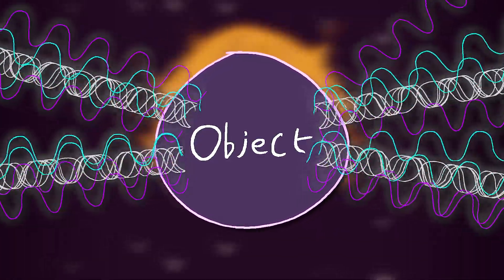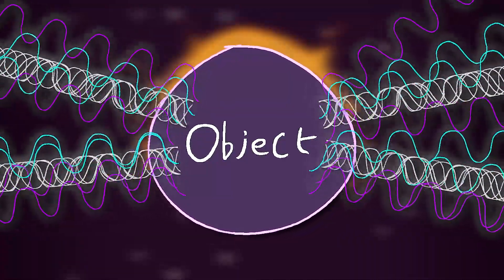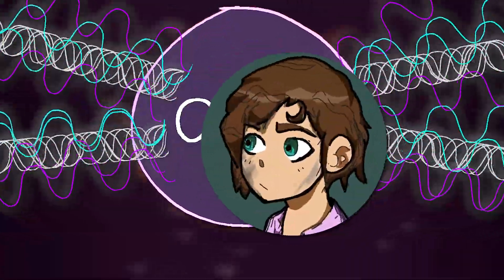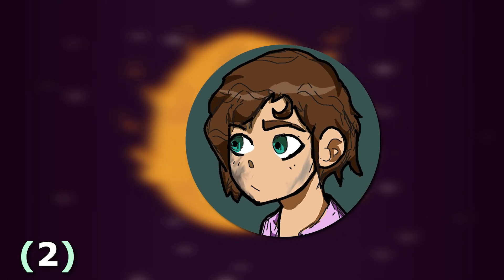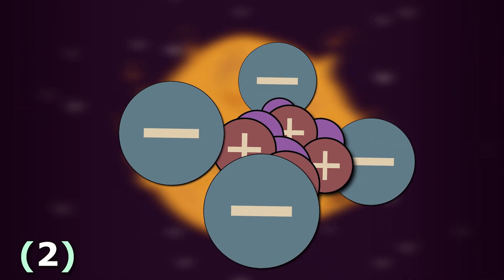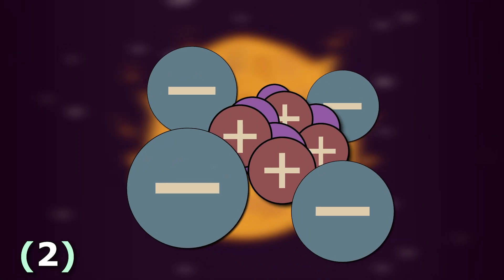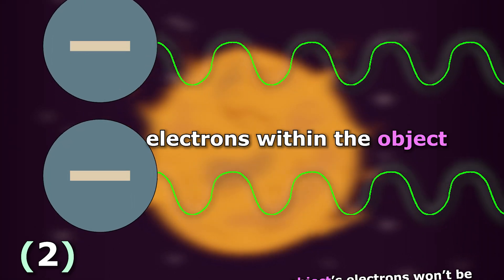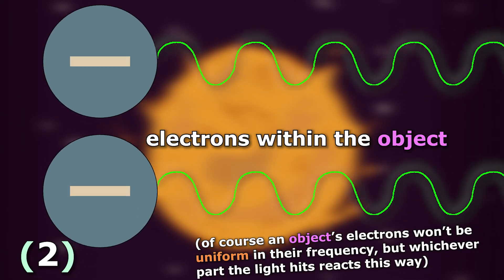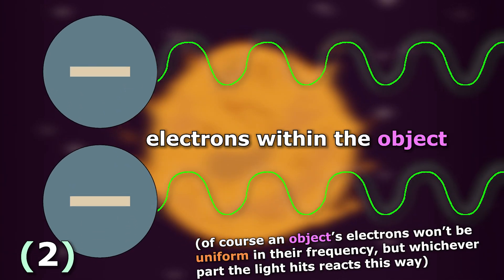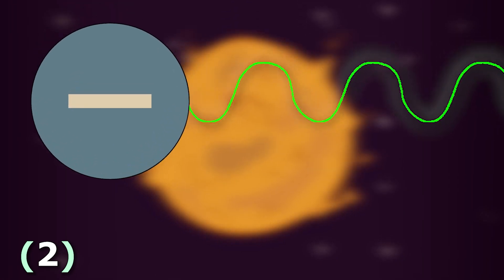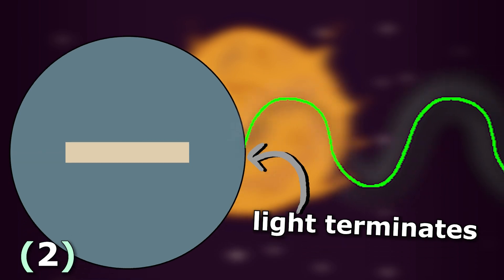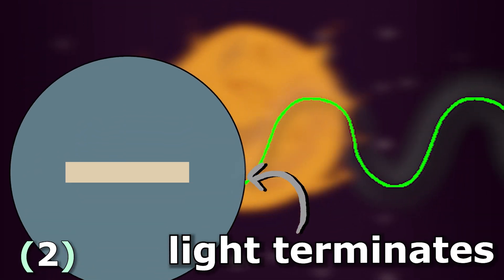What actually is it about an object that makes it reflect certain frequencies of light? Essentially, it's to do with the vibration frequency of the electrons in the atoms of the object. Light that hits an object will be absorbed if it's the same frequency, or a very close frequency, to what those electrons vibrate at. When this happens, the energy is converted into heat, and we can consider the light to just not exist anymore.